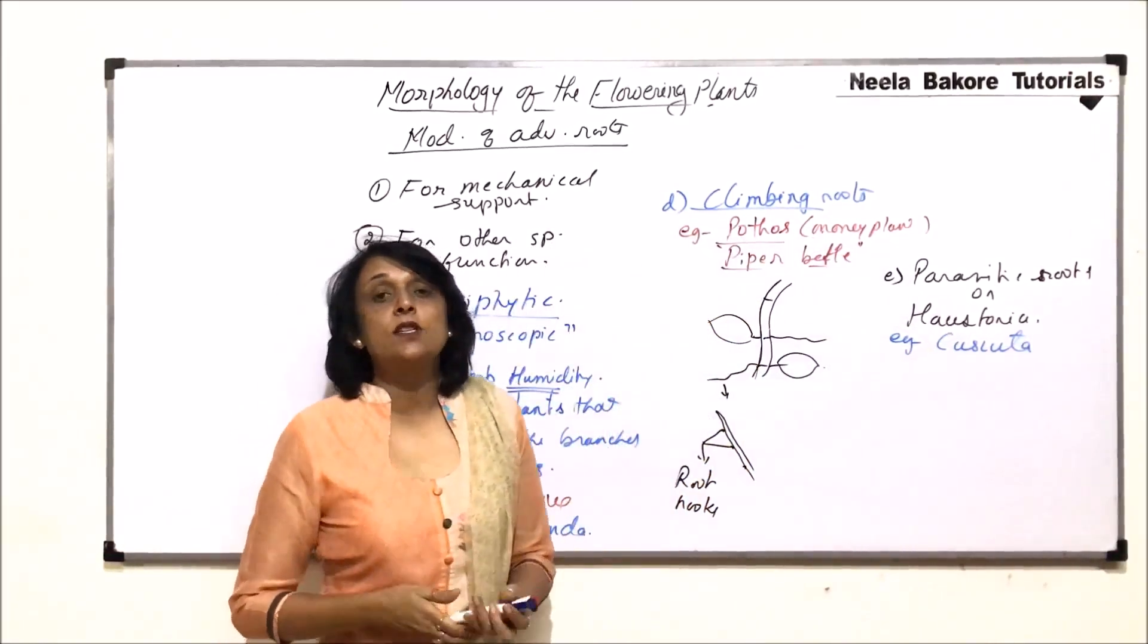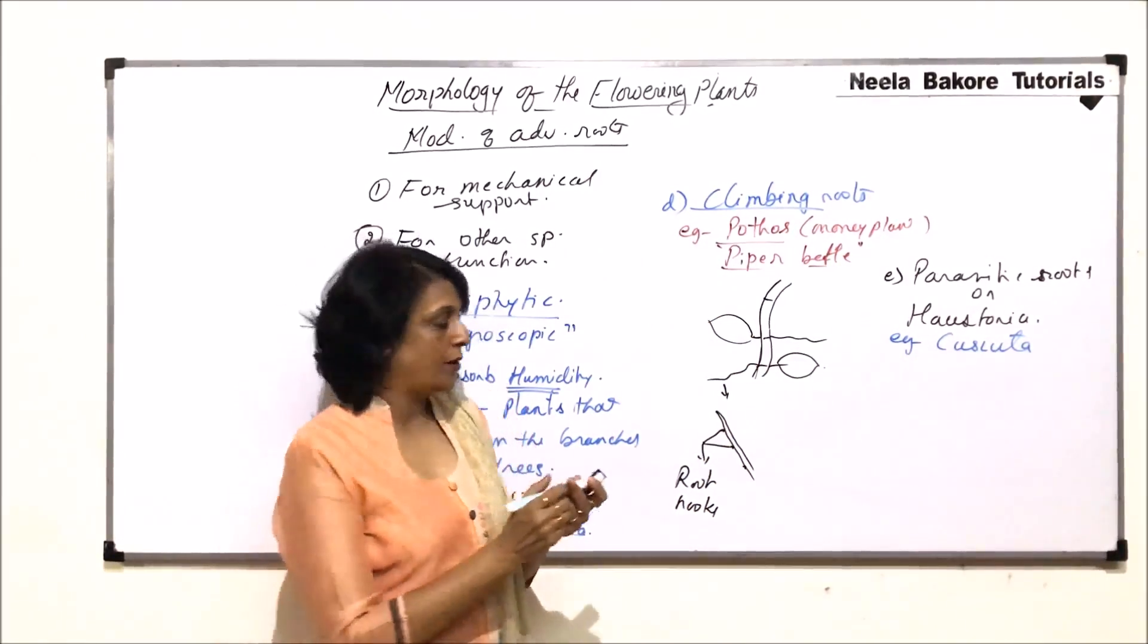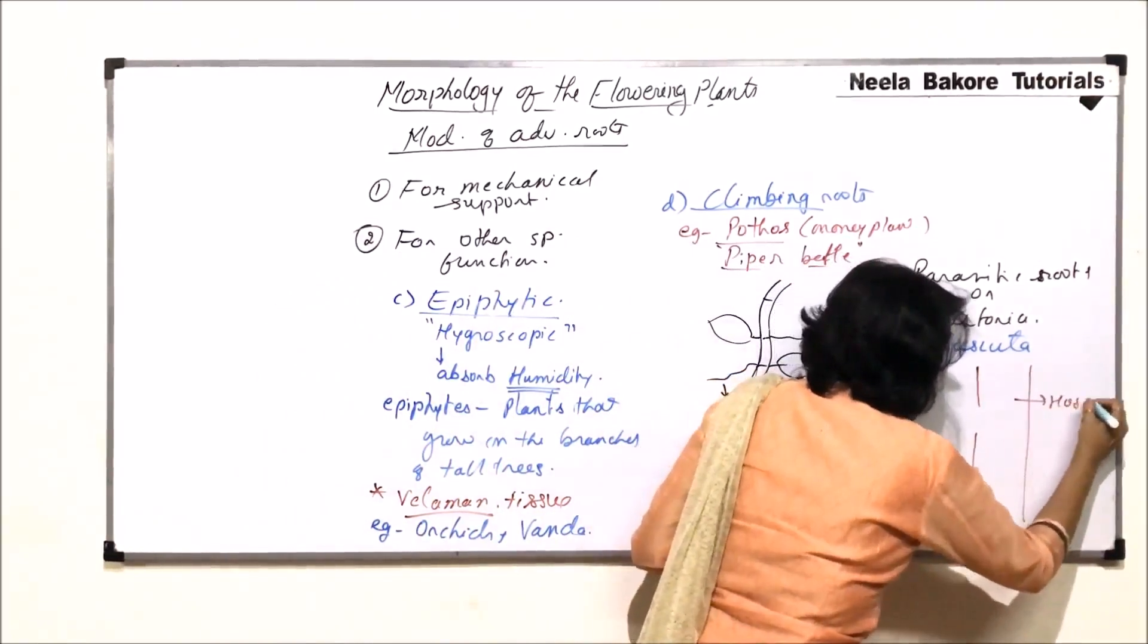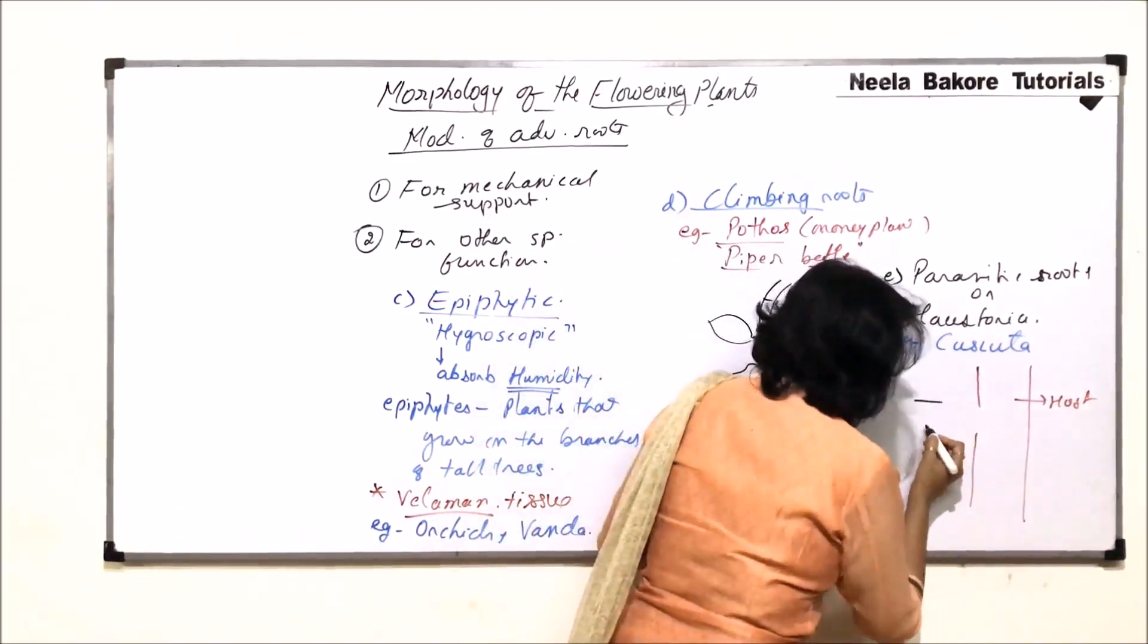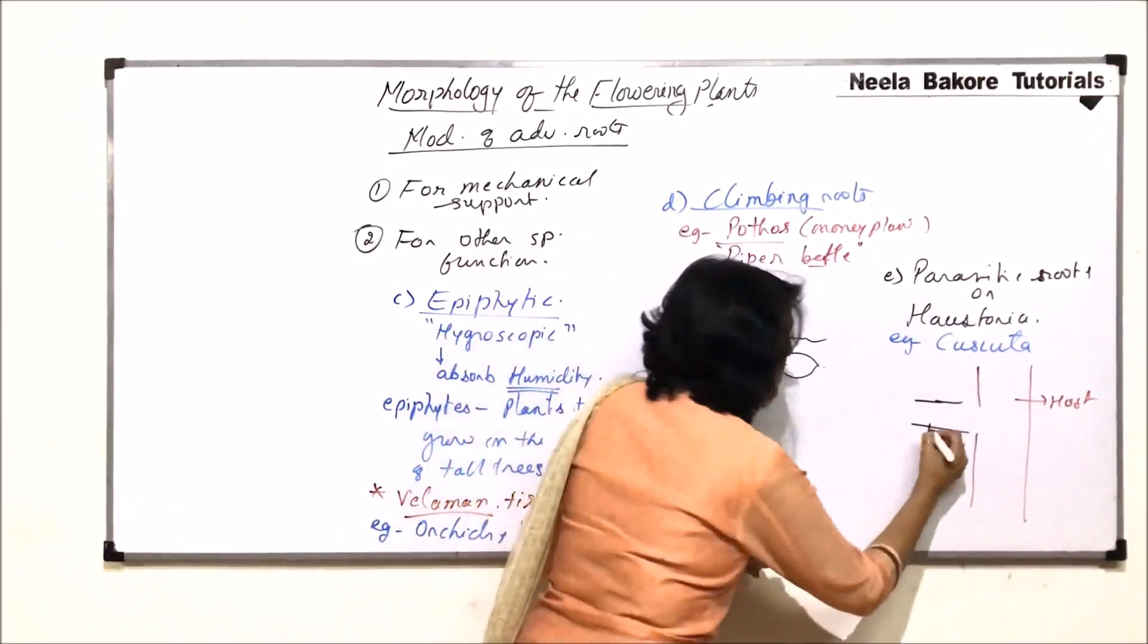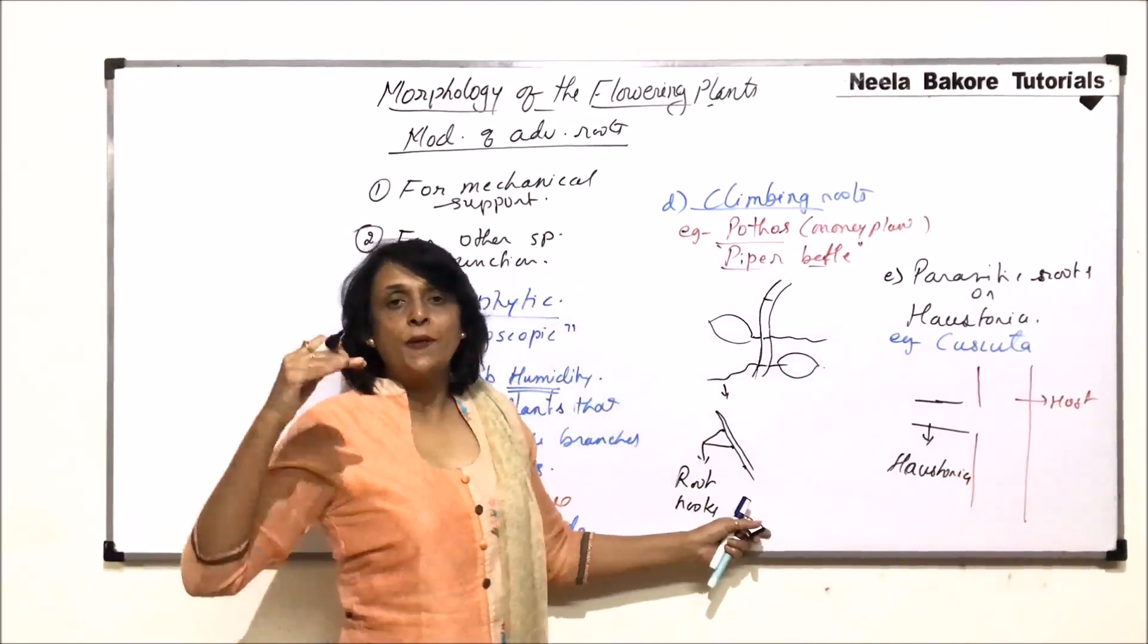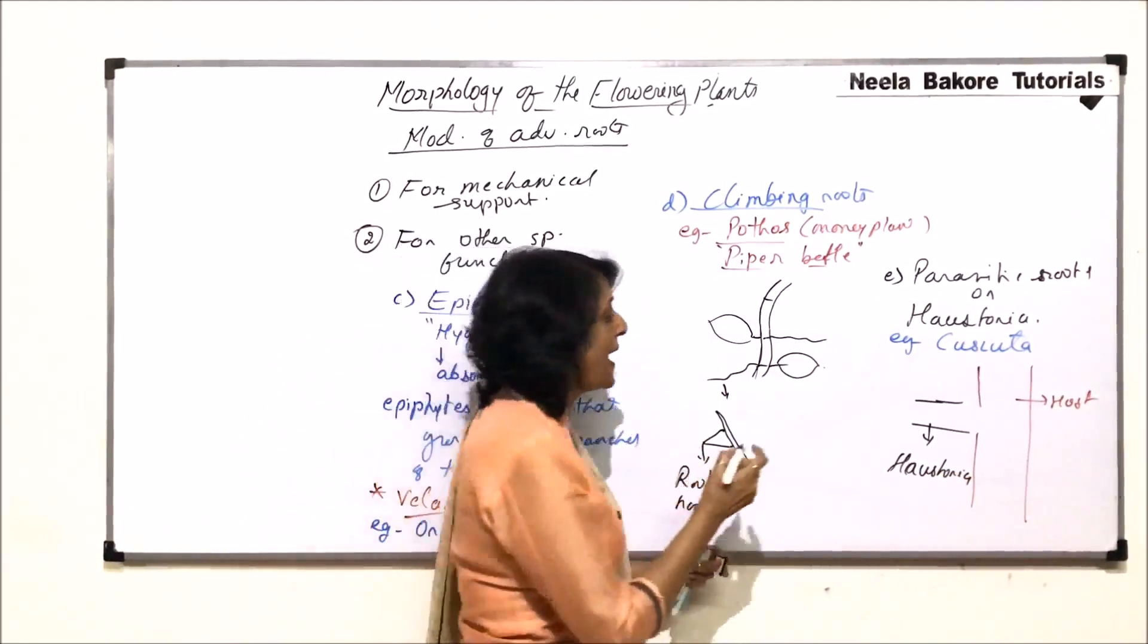Parasitic means it is dependent on the host for food and water. So, if this is the host plant. And, these are the structures or the roots of cuscuta plant. So, this is the haustoria. So, what exactly happens is, when this haustorium penetrates into the host plant,